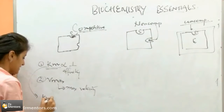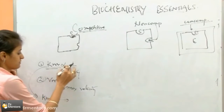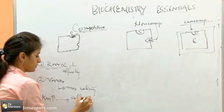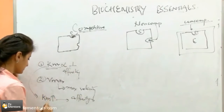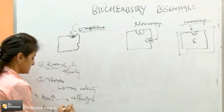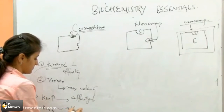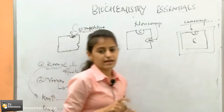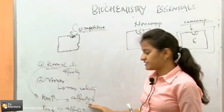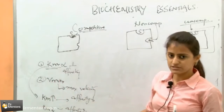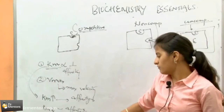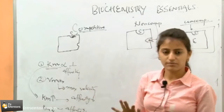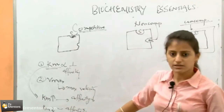When Km is inversely proportional to affinity — if Km increases, the affinity will decrease; and if Km decreases, the affinity will increase. So in any inhibition, affinity will decrease for the substrate, which means Km will increase or remain constant, but it will not decrease.